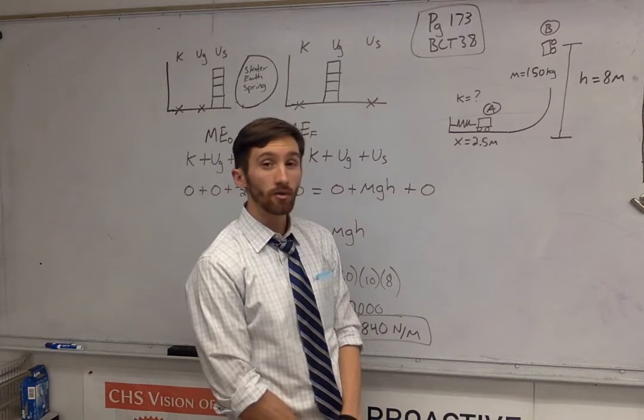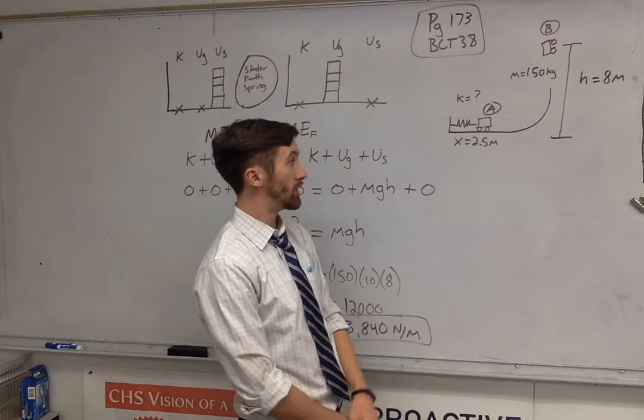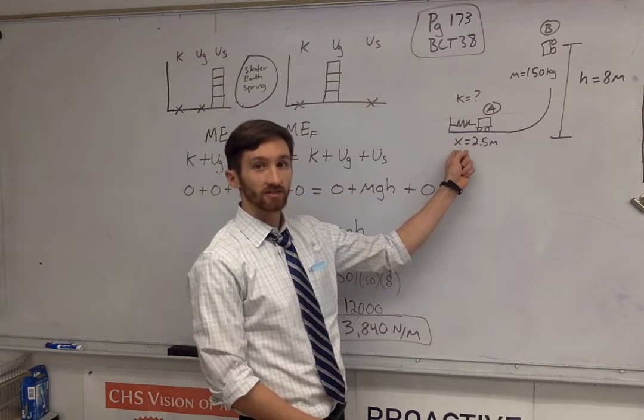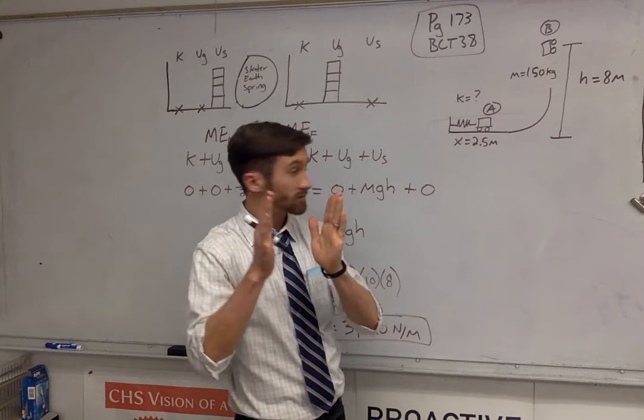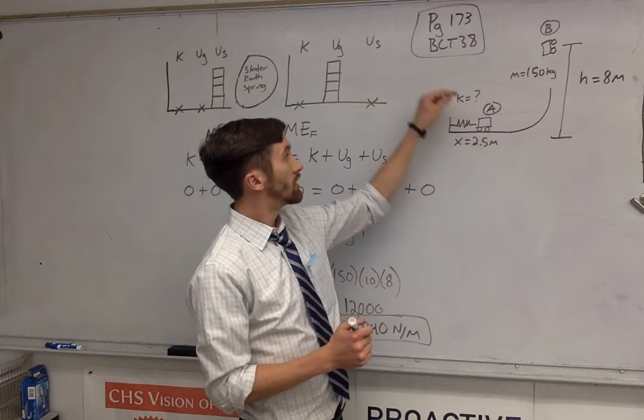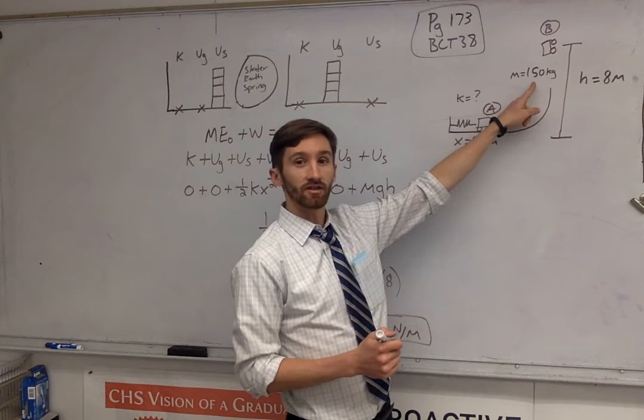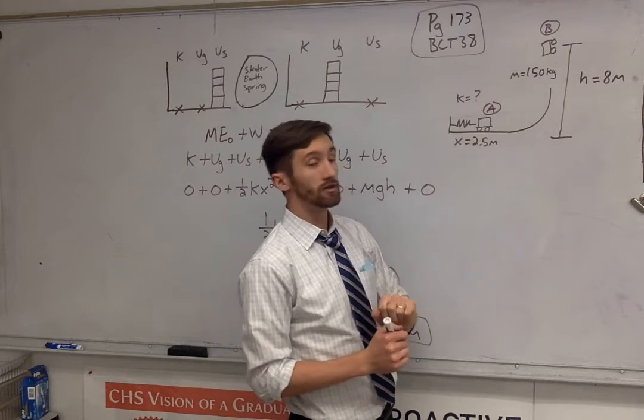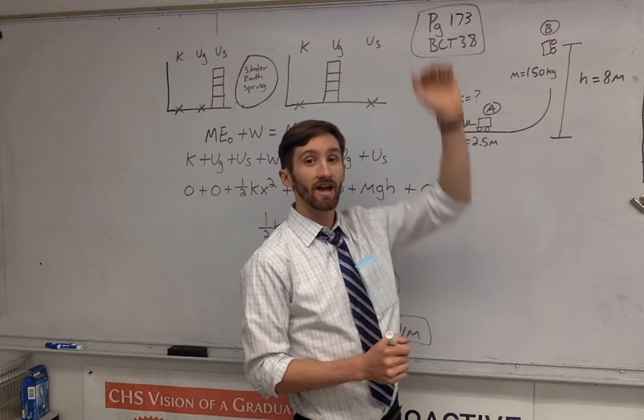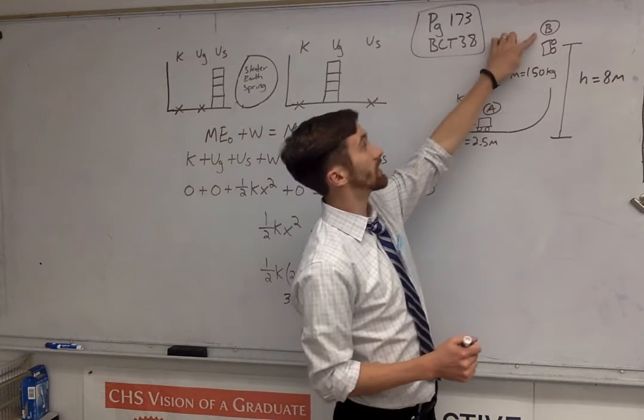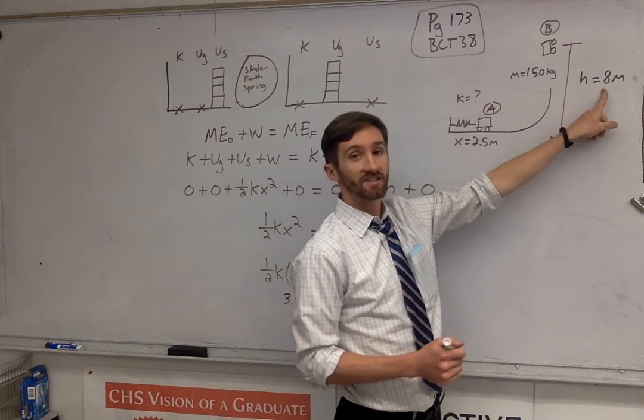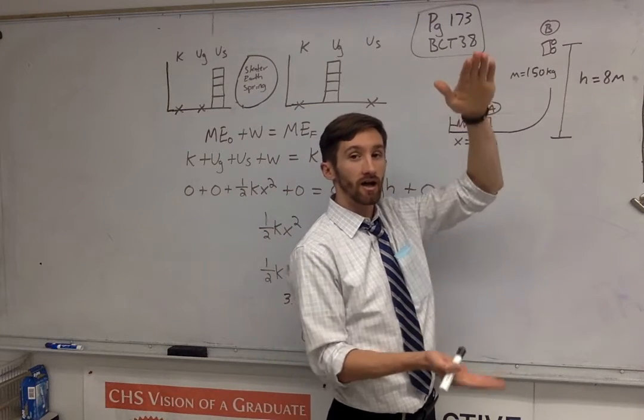I've given you a couple of givens that are not in the book. We're going to say that x, the amount that we press the spring, is 2.5 meters. We're going to say that the mass of the skateboarder is 150 kilograms, and we're going to say that at the highest point, here at point B, it flies to 8 meters high above the ground.